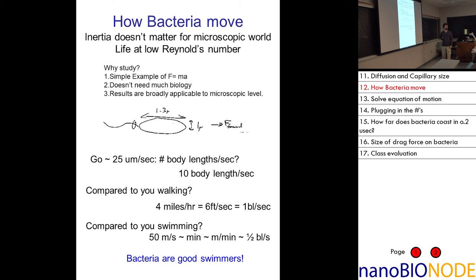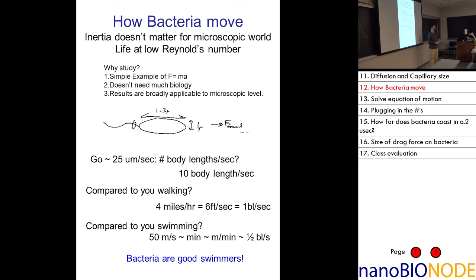Is 10 body lengths per second good? Michael Phelps does about 2 body lengths per second swimming, which is amazingly fast — most ordinary humans do about 1. So bacteria at 10 body lengths per second are really pretty amazing swimmers.